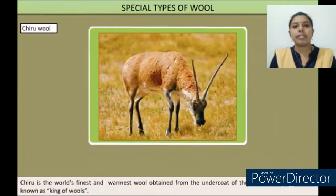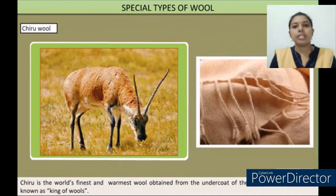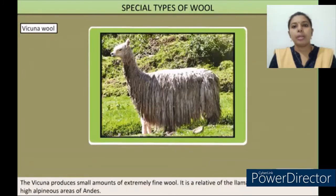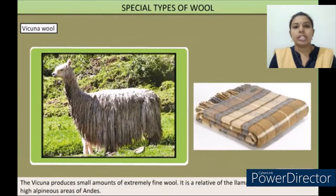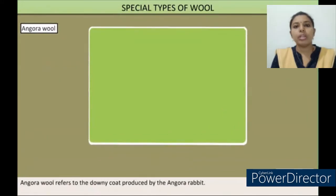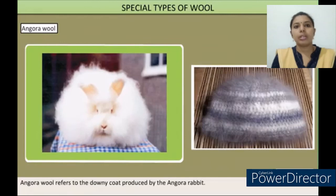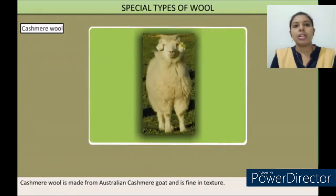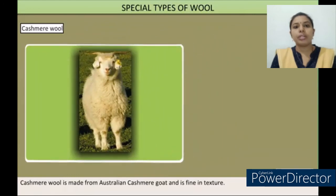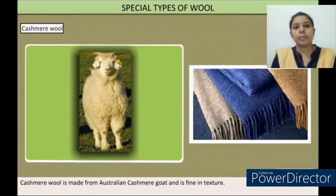Chiru is the world's finest and warmest wool, obtained from the undercoat of the Tibetan antelope, known as the king of wool. The vicuña produces small amounts of extremely fine wool and is a relative of the llama and alpaca. Angora wool refers to the downy coat produced by the Angora rabbit. Kashmiri wool is made from the Australian Cashmere goat and is fine in texture. Thank you students, the lesson is completed.